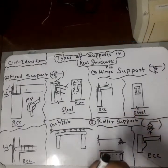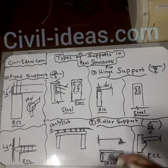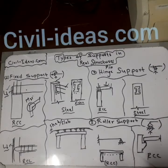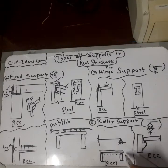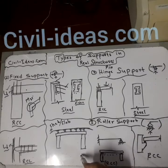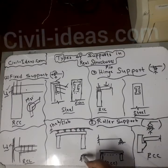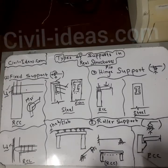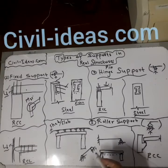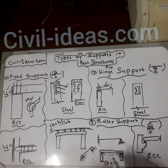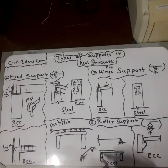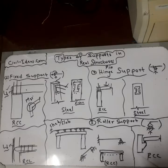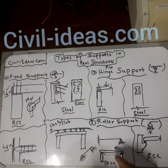These are the hinge or pin supports. The third type is the roller support. As you may have seen, this is a simply supported beam — one side is a hinge and the other is a roller support, making it a determinate structure. In a bridge, this is the girder, this is the column, and this is the bearing pad on which the girder rests.